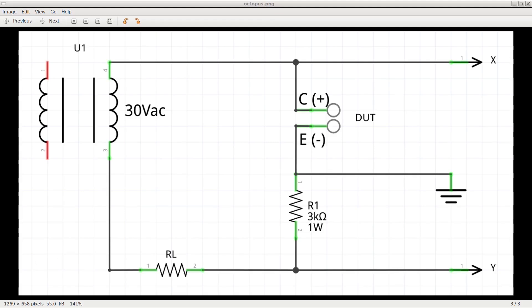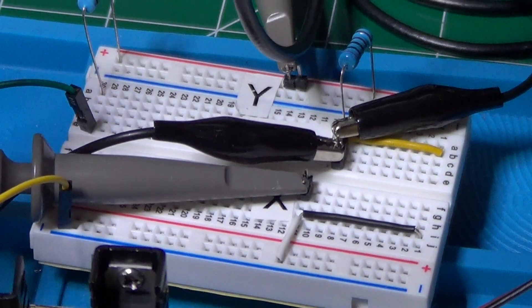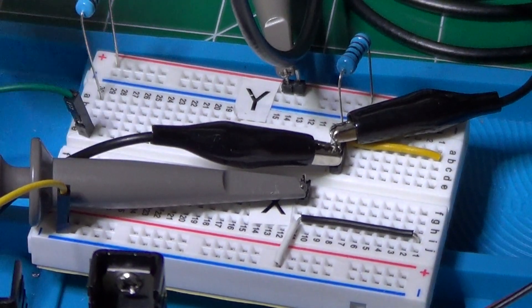This sine wave approach is sometimes called an octopus due to the number of wires coming out of the test circuit: two for the DUT, three for the oscilloscope and two for the transformer. Let's now take a look on how this circuit practically works.